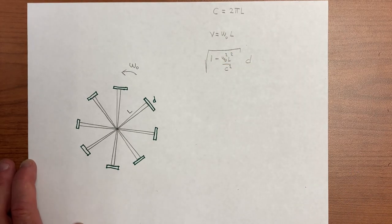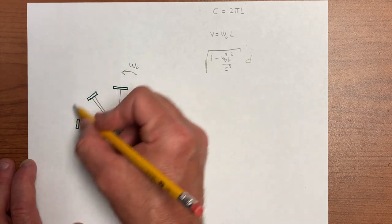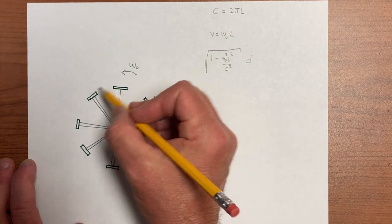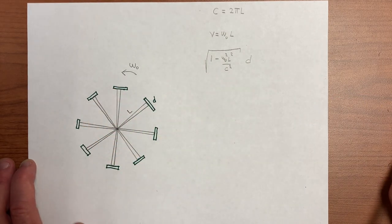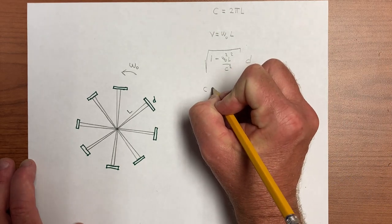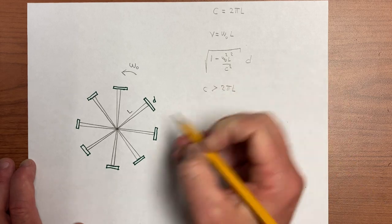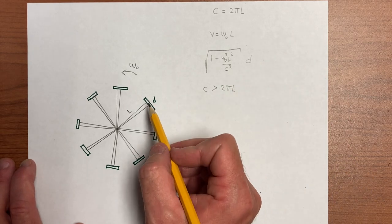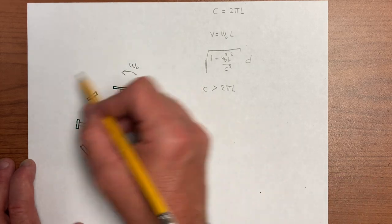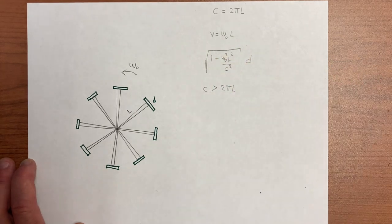And so measuring the path traced out by each spoke in this way suggests to us that the path C is actually greater than 2 pi L, because we need more of these rods to cover the entire space because each one is shorter by that amount.